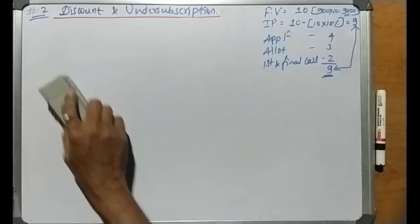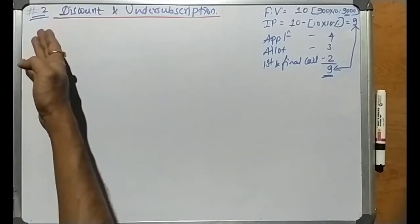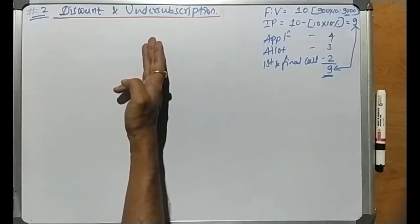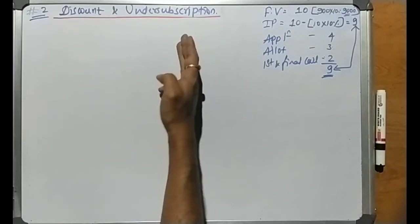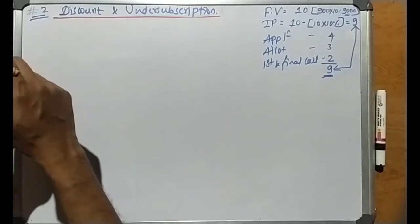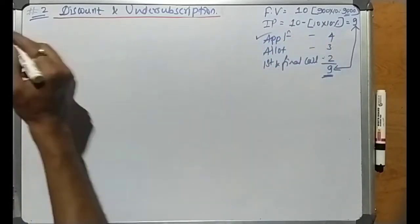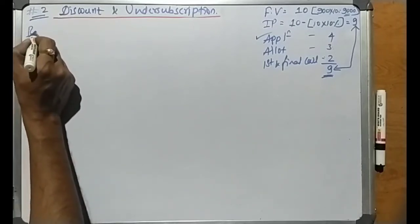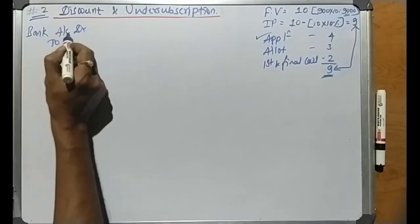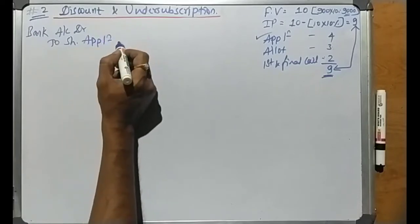Now we will write journal entries in the books of X Company Limited. The format has particular columns: date, particulars, ledger folio, debit, and credit. The first stage is the application stage. The first entry is the receipt entry: Bank Account debit to Share Application Account.